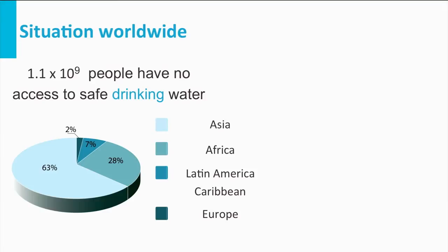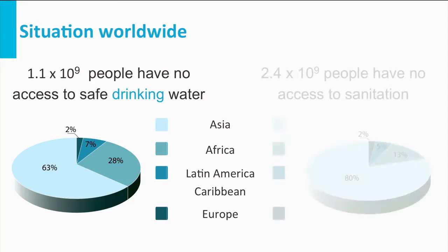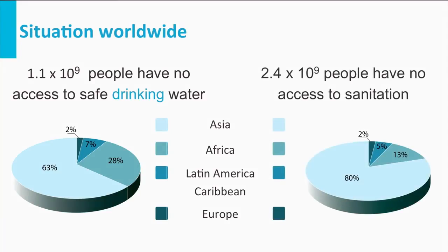About 1 billion people do not have access to safe drinking water, which is particularly a problem in developing countries in Africa, Asia, and Latin America. And about 2.4 billion people do not have access to sanitation. The major hurdles have to be taken in developing countries.